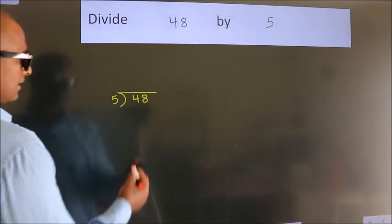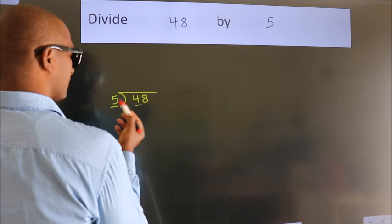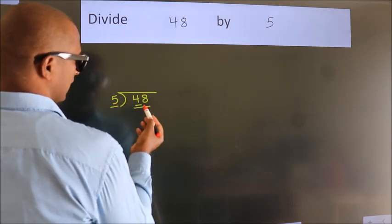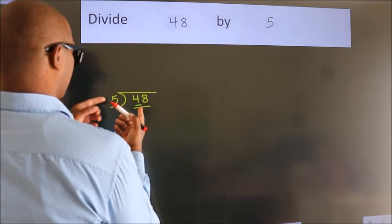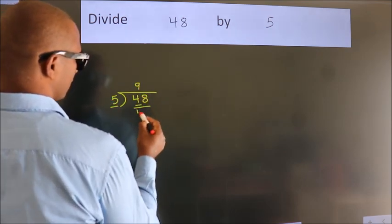Next, here we have 4. Here 5. 4 is smaller than 5, so we should take two numbers, 48. A number close to 48 in the 5 table is 5 nines, 45.